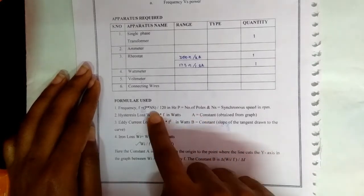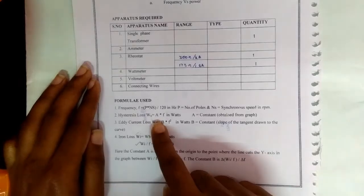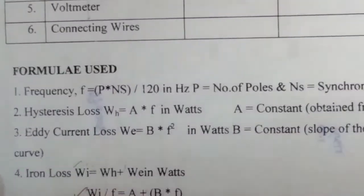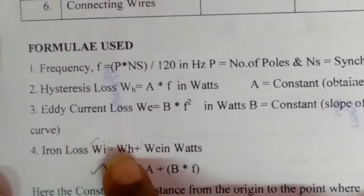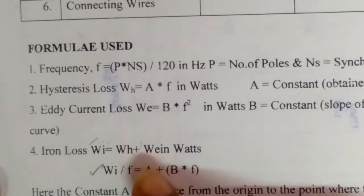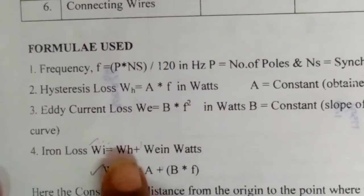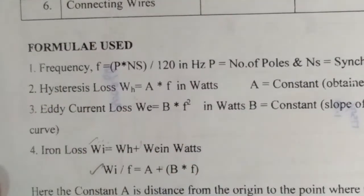Iron loss is equal to wh plus we in watts. Wh is the hysteresis loss and we is the eddy current loss.